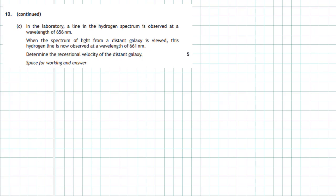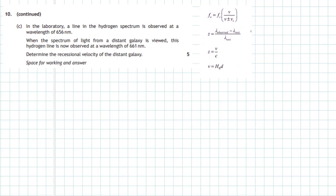Looking at the data book section on Hubble's law, we see two equations. First, the z-ratio: z = (λ_observed − λ_rest) ÷ λ_rest. Second, the z-ratio equals the recessional speed of the galaxy divided by c. By combining these two equations — working out z first and then substituting into the second equation — we can find the recessional speed of the galaxy.